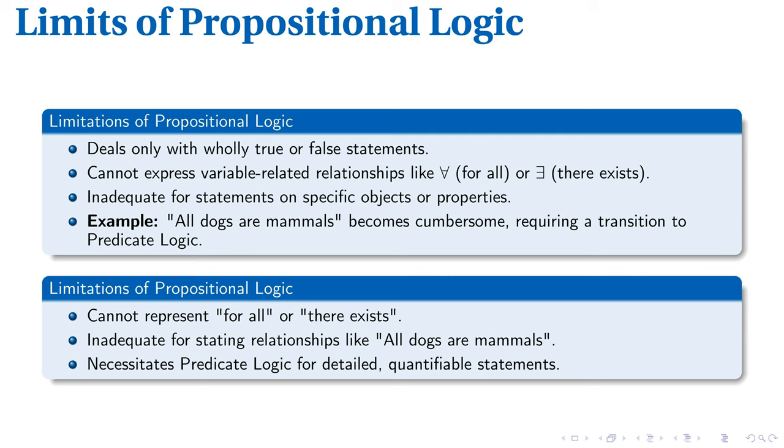This is where predicate logic steps in, allowing us to express complex statements like: for all x, if x is a dog, then x is a mammal, accurately. It's clear that for representing detailed, quantifiable statements, we need to move beyond propositional logic towards the elaborate structure of predicate logic.